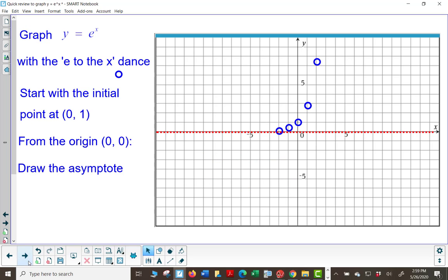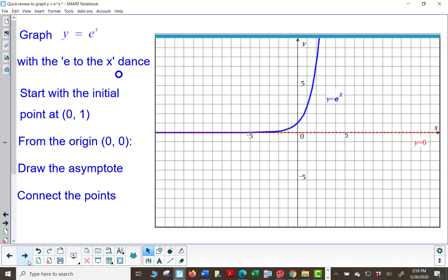We'll draw the horizontal asymptote, the x-axis. We'll connect the points with a nice, smooth, continuous curve. And we realize that this is an example of exponential growth.